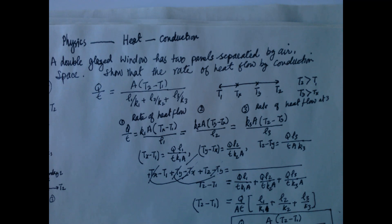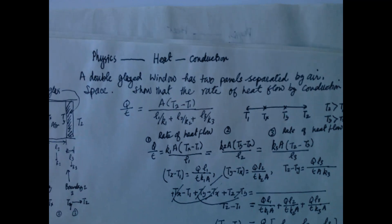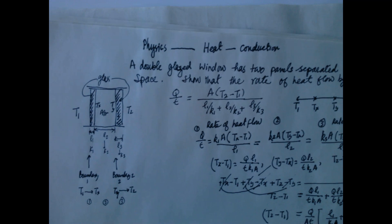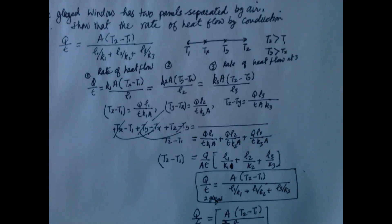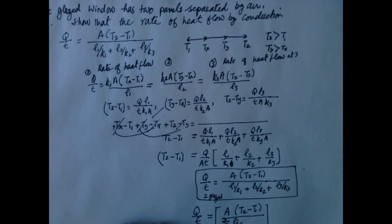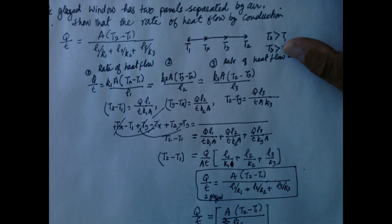The key point is that the rate at each boundary must be equal — otherwise there would be no equilibrium. This is the generalized expression for the rate of heat flow by conduction through multiple layers.